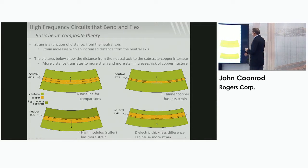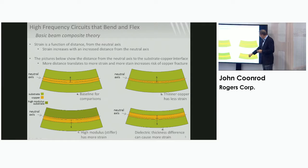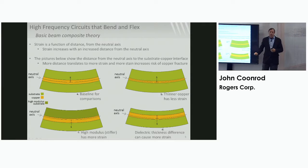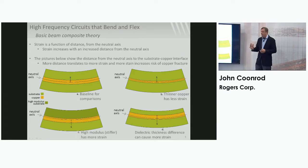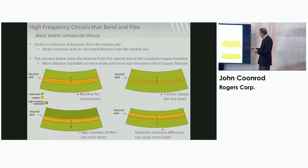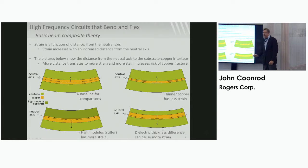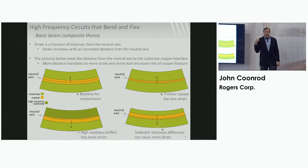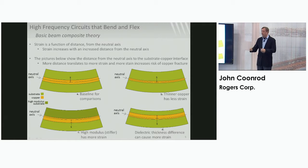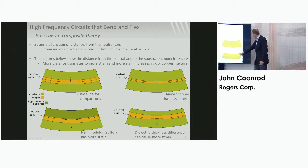This last example is the same as the first one except it's got a thinner substrate. Thinner substrate, in this case, off balances the neutral axis. The neutral axis shifts down toward the higher modulus area or where you have more volume. Now the distance from the neutral axis to the copper substrate interface is greater. In that case, you should have higher strain, which means when you apply a bend, there's more probability of making cracks at that interface of the copper and the substrate.